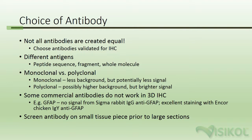Some commercial antibodies do not work in 3D-IHC. For example, with GFAP, we obtained no signal with the Sigma-Aldrich Rabbit IgG anti-GFAP. However, we obtained excellent staining with the Encore Bio Chicken IgY anti-GFAP. Screen your antibody on a small piece of tissue prior to large sections to ensure that it's compatible with 3D-IHC.